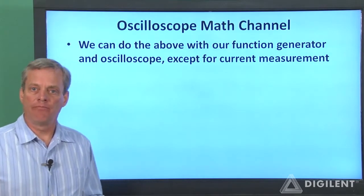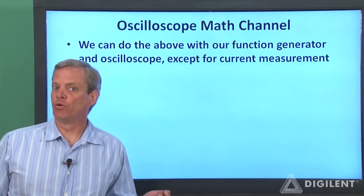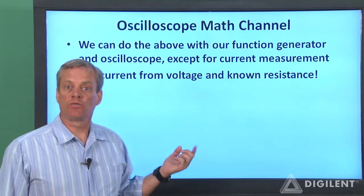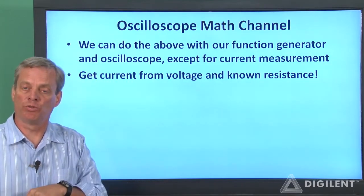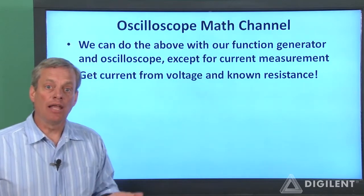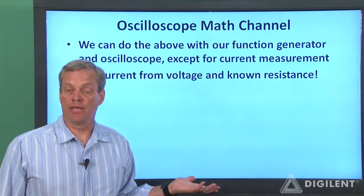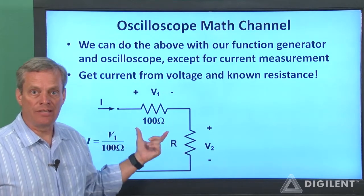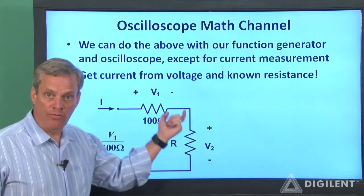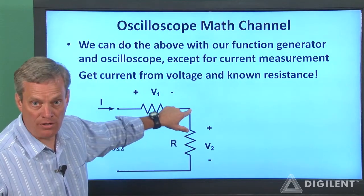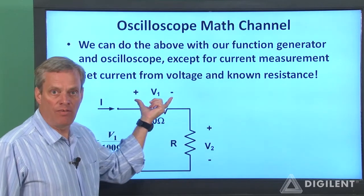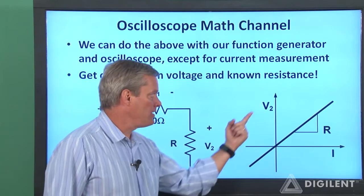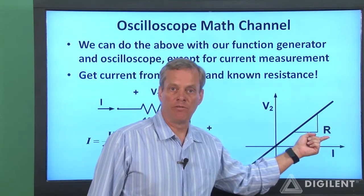Our function generator can apply time-varying power, and our oscilloscope can measure time-varying voltages. For time-varying current, if we have a resistor with a known resistance, we can calculate the current through the resistor from the measurement of the resistor's voltage and its resistance value. Our oscilloscope provides the ability to perform calculations based on measured voltages. Consider this circuit: we put a 100-ohm resistor in series with the resistor we want to characterize. The current through both is the same, which we can prove by applying Kirchhoff's current law. If the voltage across the known resistance is V1, we can calculate the current as V1 over 100 ohms. We can then plot the voltage V2 against this current — the slope of this curve will be our resistance R.